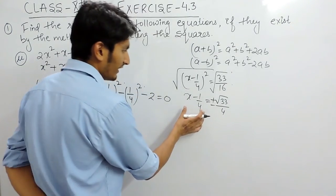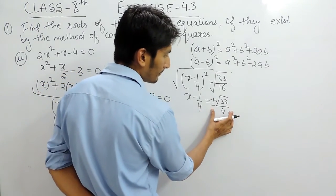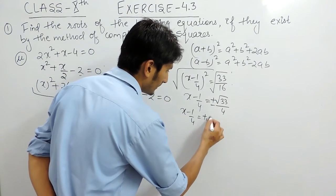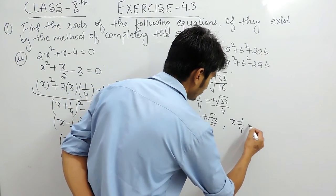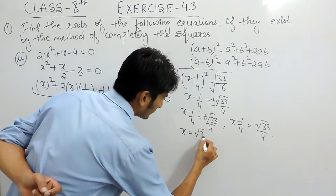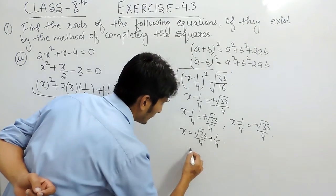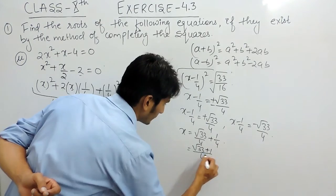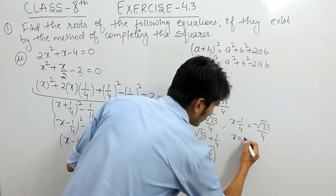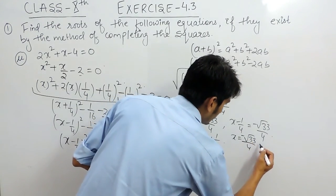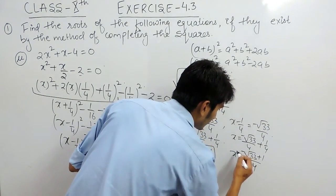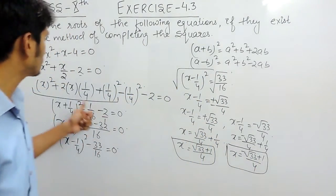So the value of x + 1/4 can be either plus root 33 upon 4 or minus root 33 upon 4. Shifting the constant to the other side, the first value of x will be −1/4 + root 33 upon 4, and the second value of x will be −1/4 − root 33 upon 4. These are the two roots of the equation.